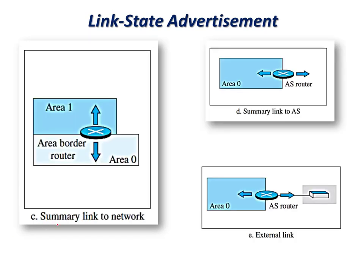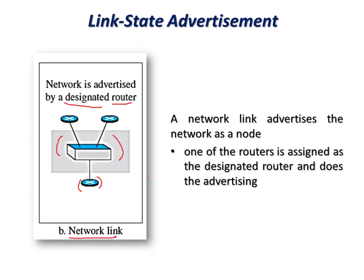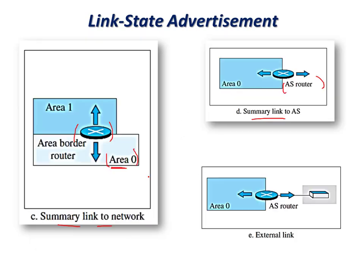A summary link to a network is handled by the area border router, which advertises a summary of links collected by the backbone area. A summary link to an autonomous system is handled by the AS boundary router, advertising summary links from other autonomous systems. These are the link types in OSPF used to advertise network information to other nodes and networks.